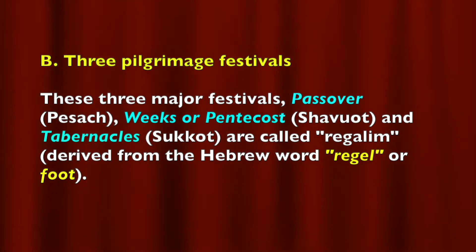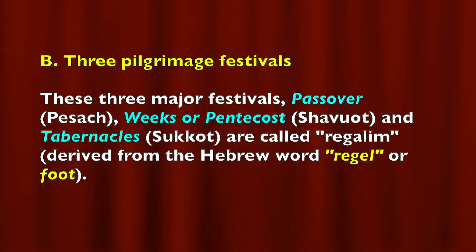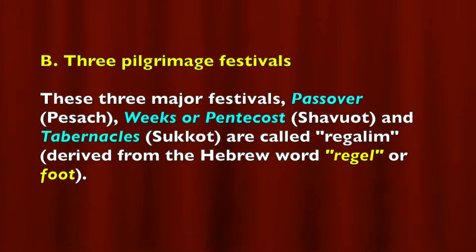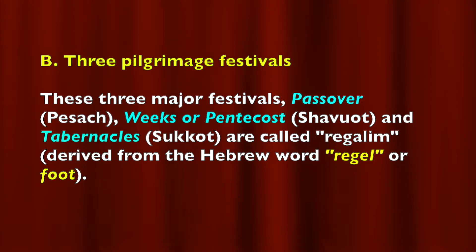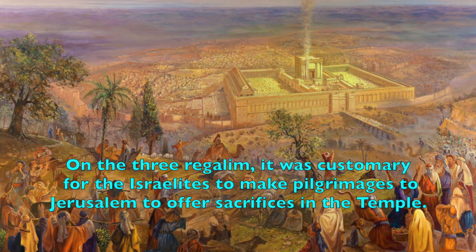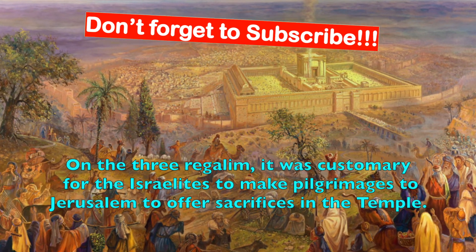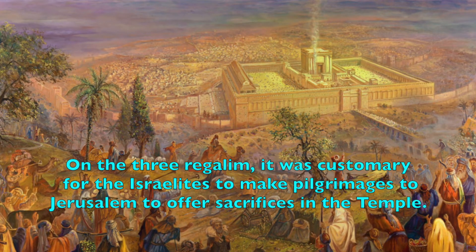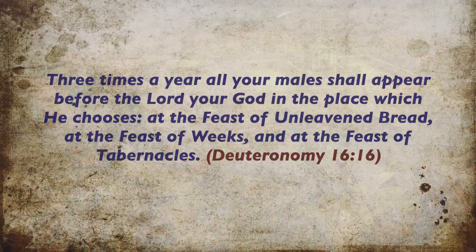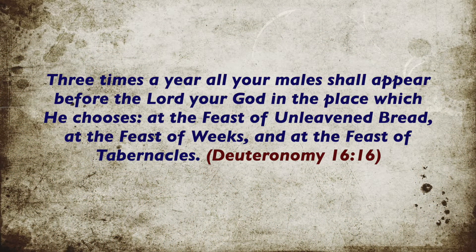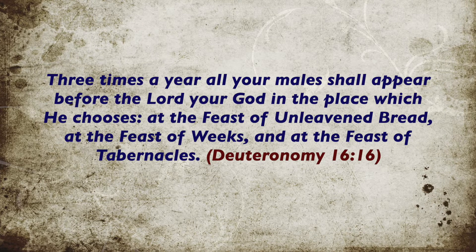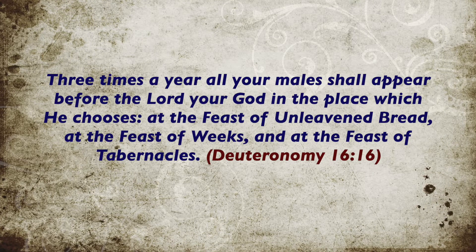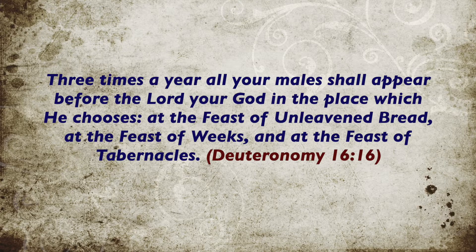The second classification of holiday is what we call the three pilgrimage festivals. These three major festivals — Passover (Pesach), Weeks or Pentecost (Shavuot), and Tabernacles (Sukkot) — are called Regalim, derived from the Hebrew word Regel, meaning foot. On the three Regalim, it was customary for Israelites to make pilgrimage to Jerusalem to offer sacrifices in the temple. As Deuteronomy 16:16 says: 'Three times a year all your males shall appear before the Lord your God — at the Feast of Unleavened Bread, at the Feast of Weeks, and at the Feast of Tabernacles.'